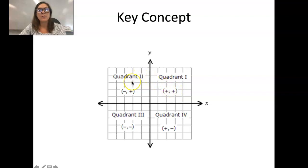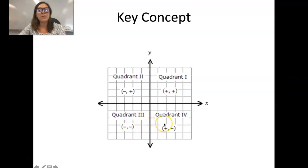Then you circle counterclockwise to quadrant 2 where your x becomes negative and your y becomes positive. Then down to quadrant 3 where everything is negative, and then over to quadrant 4 where it's positive and negative.